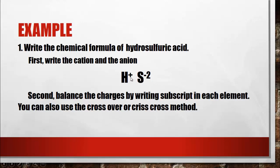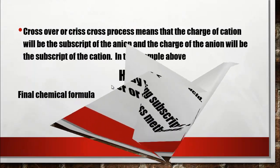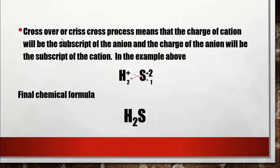If the charges are already equal, there is no need to write a new subscript. The crossover or crisscross process is one wherein the charge of the cation will be the subscript of the anion, and the charge of the anion will be the subscript of the cation.